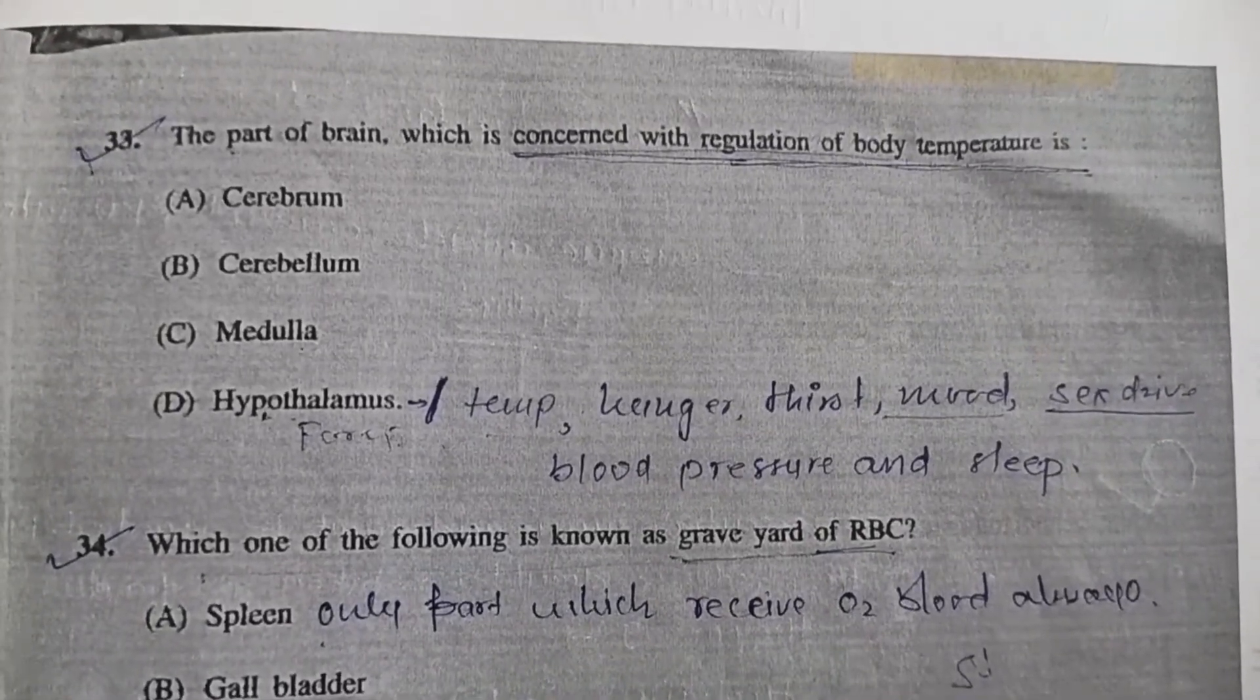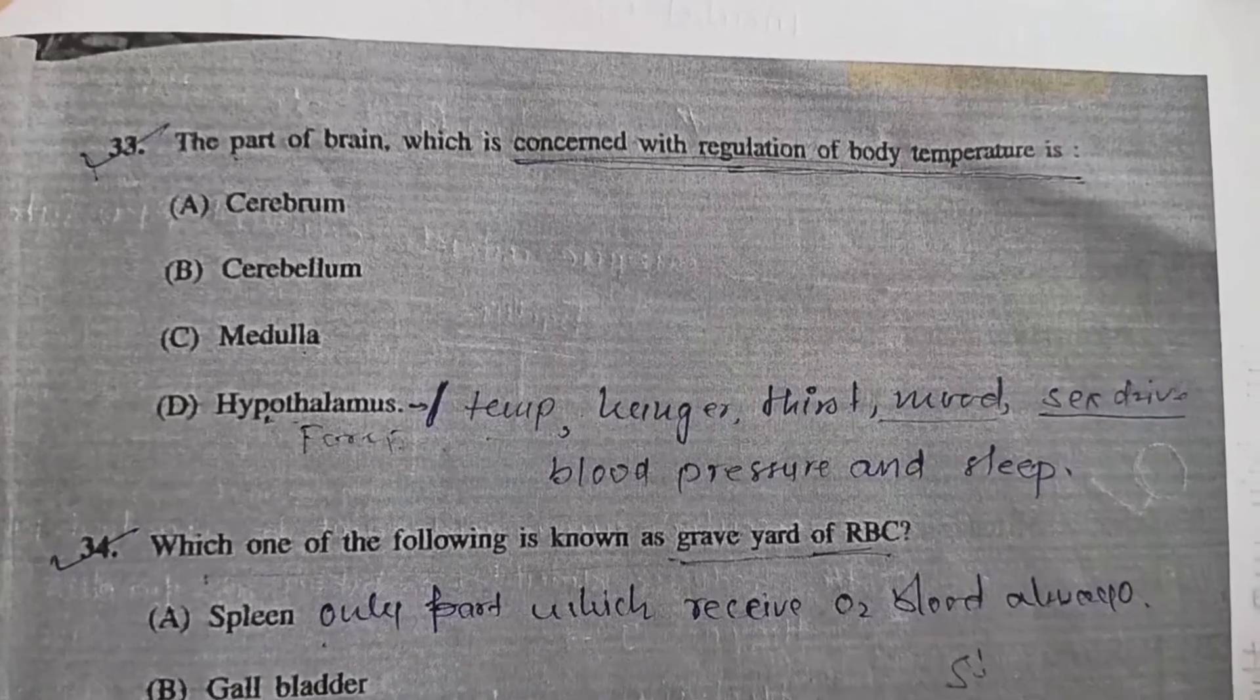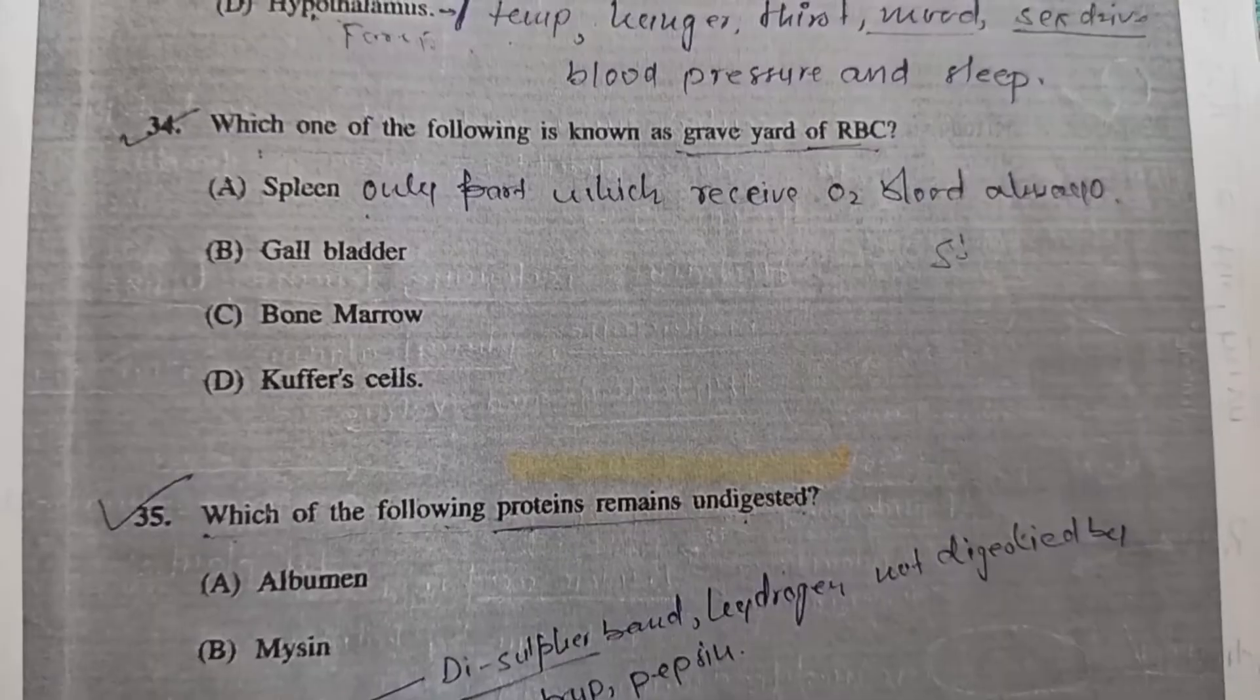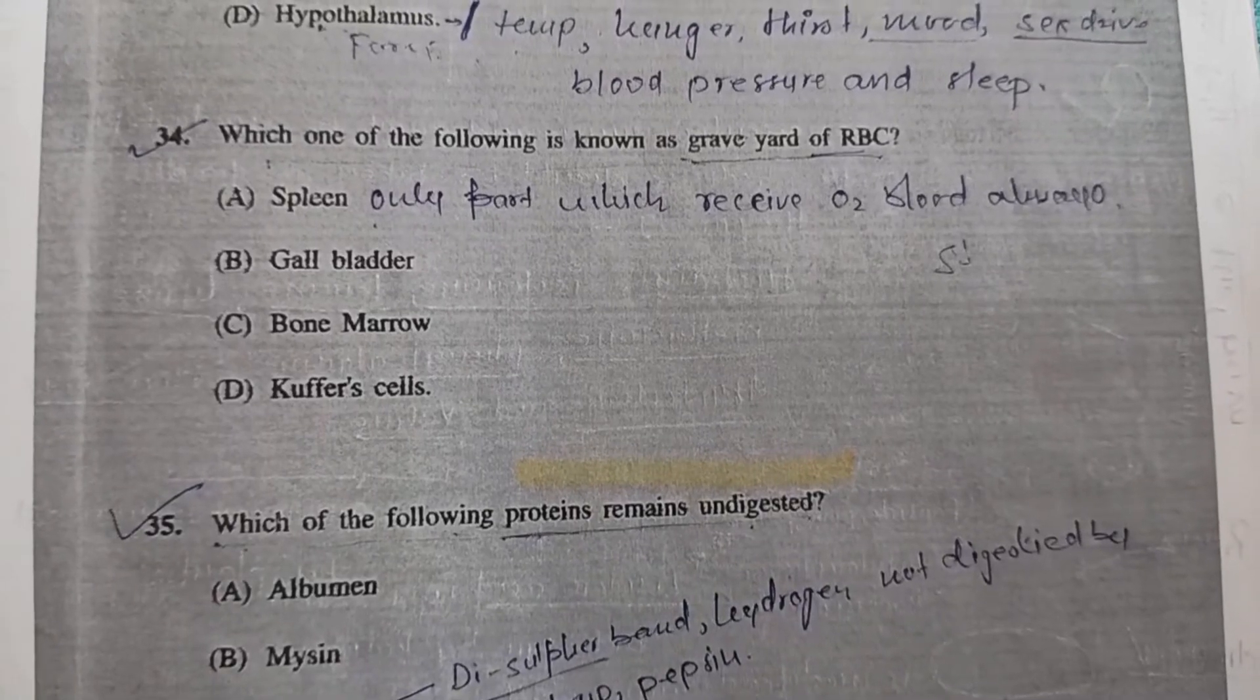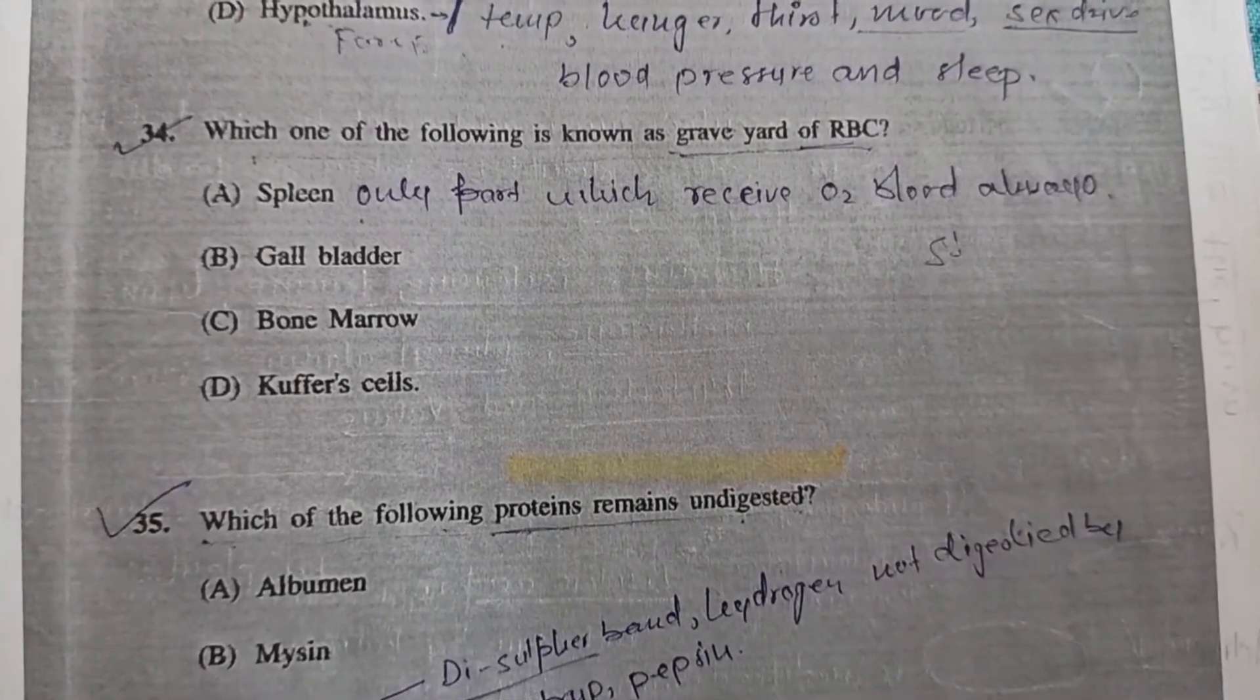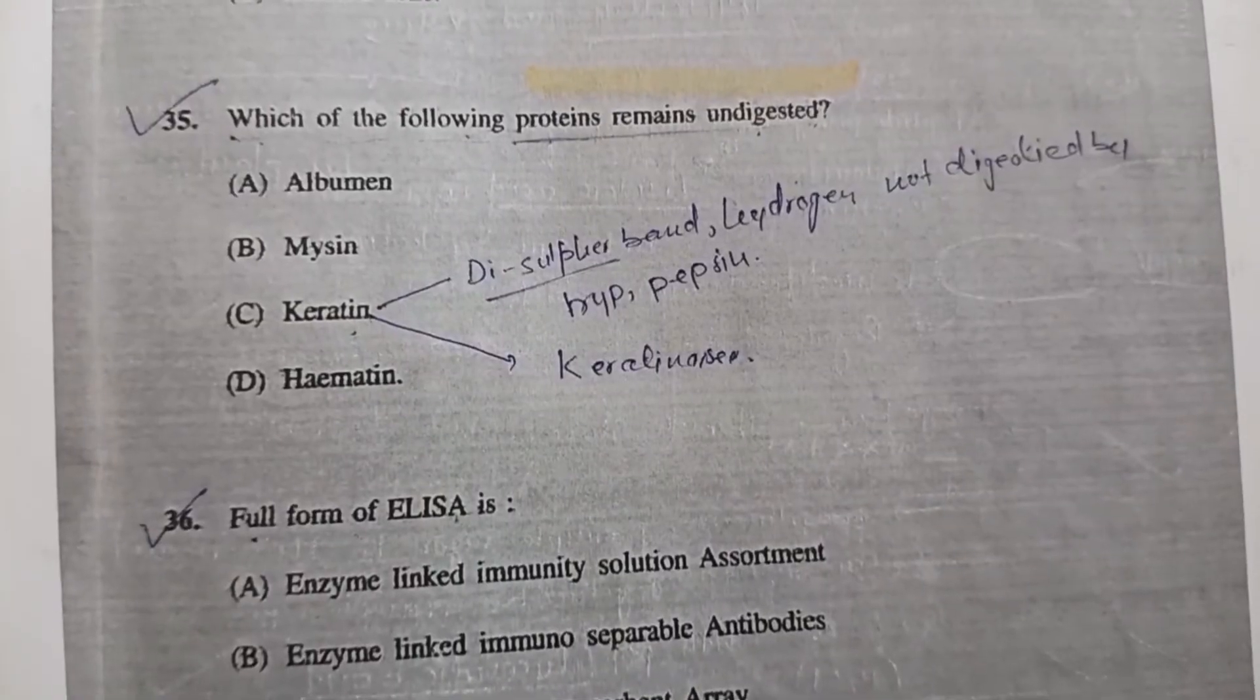Question 33: The part of brain concerned with regulation of body temperature is hypothalamus. Question 34: Which of the following is known as graveyard of RBCs? Answer is A, spleen. Question 35: Which protein remains undigested? Answer is option C, keratin.